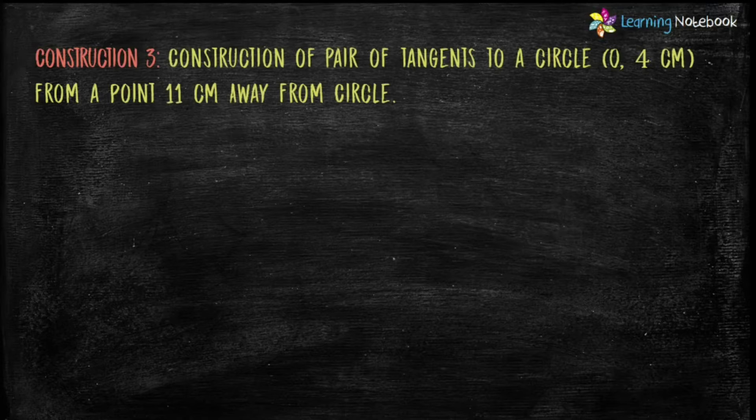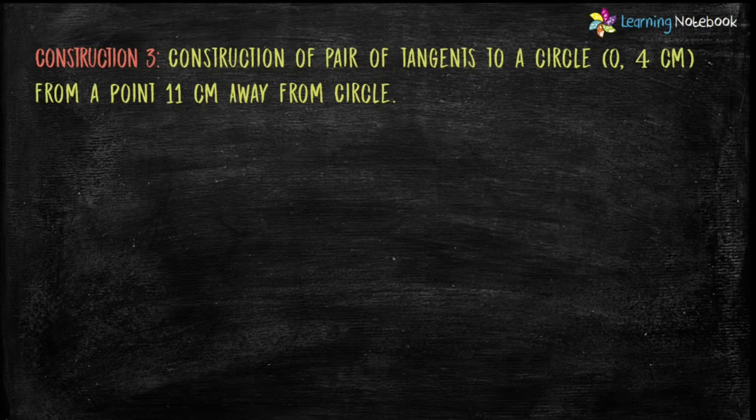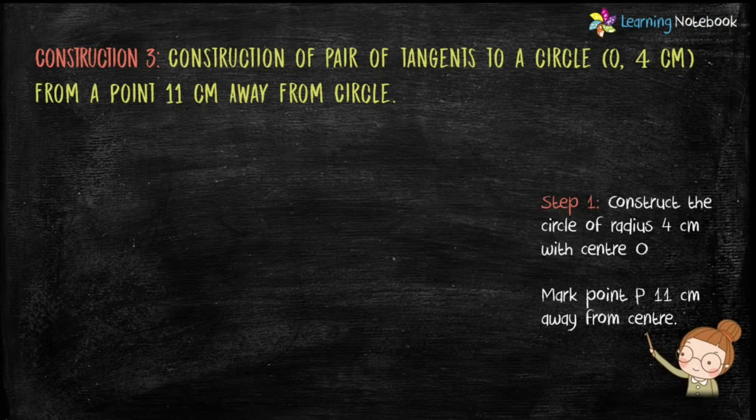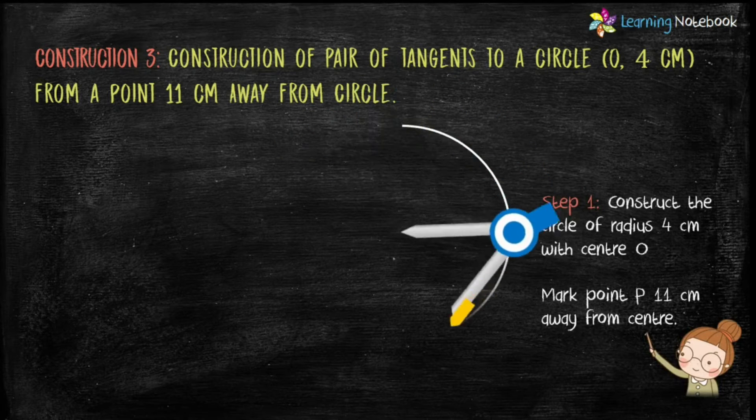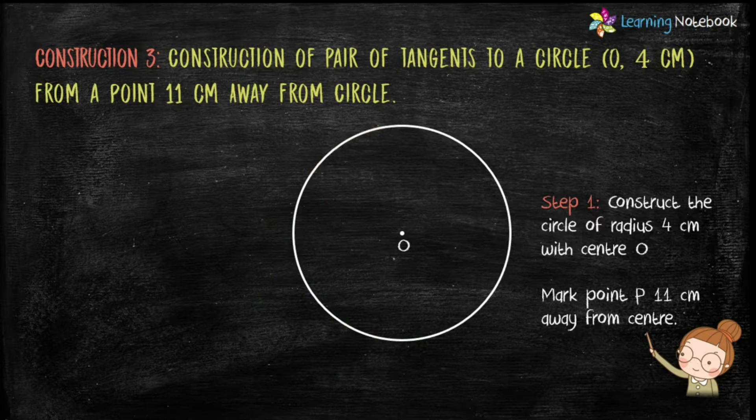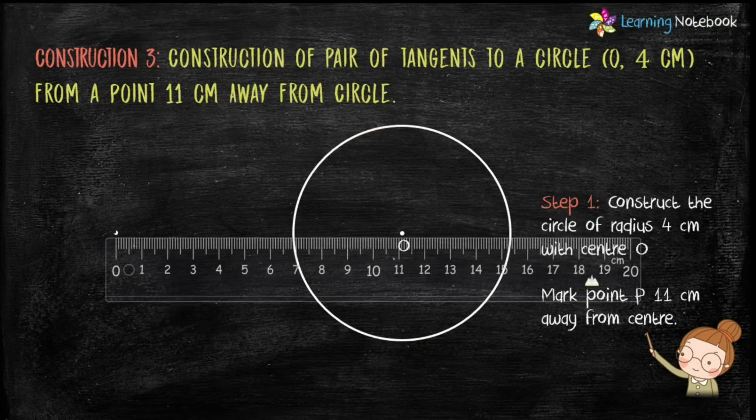Let's start and do construction number 3, which is construction of pair of tangents to a circle with center O and radius 4 cm from a point 11 cm away from circle. Step 1 is construct the circle of radius 4 cm with center O. Mark point P 11 cm away from the center.